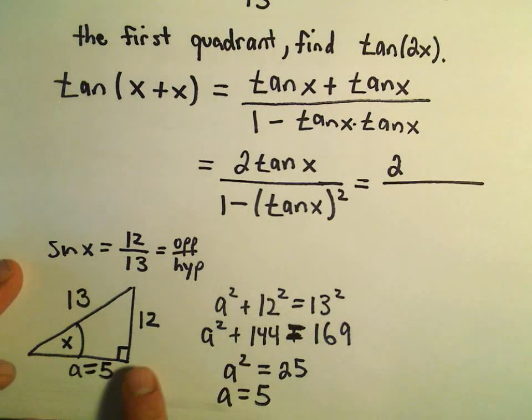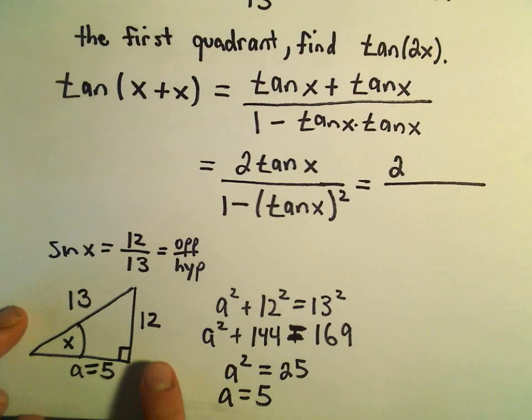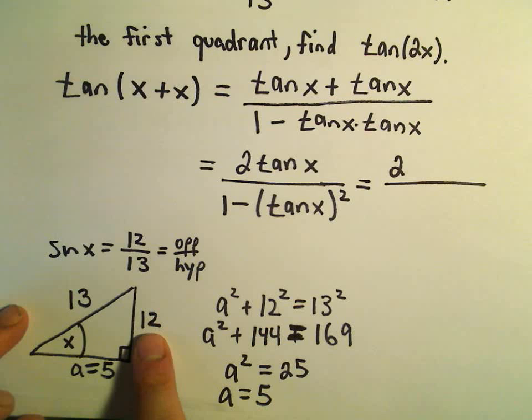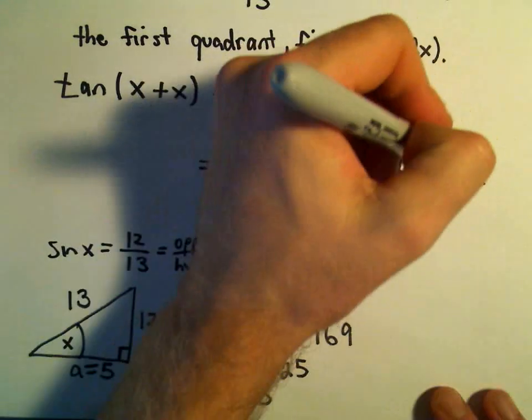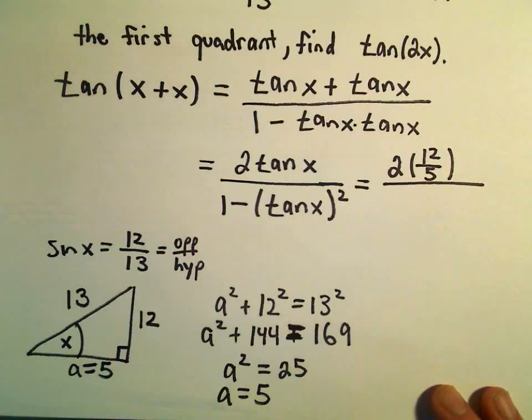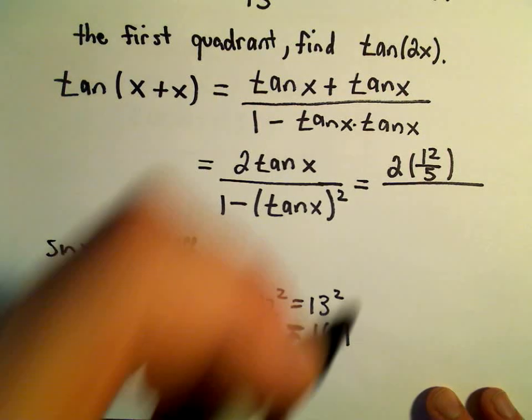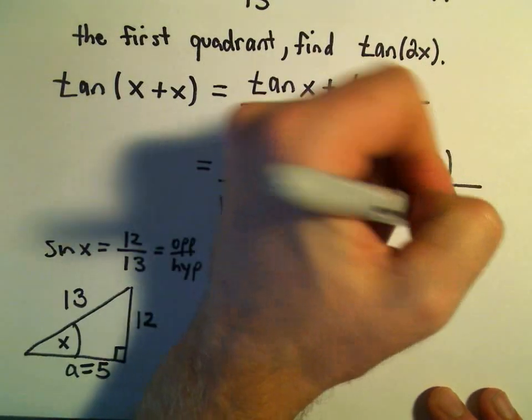Okay, so now I can read tangent of x off from our triangle. So remember, tangent is the ratio of the opposite side to the adjacent side. So the opposite side is 12, the adjacent side is 5, so I'm just going to plug that in. And then we'll simplify things down a little bit.